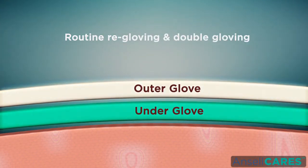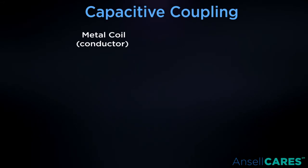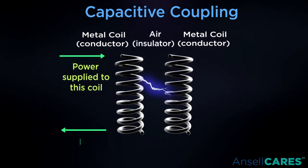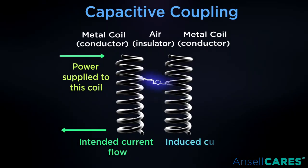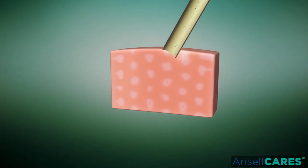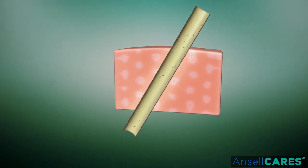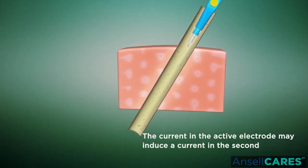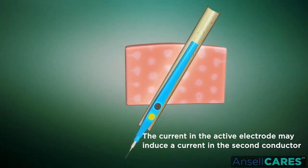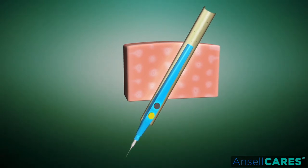Solution: routine re-gloving and double gloving can prevent these problems. Regarding capacitive coupling: capacitance is the ability of two conductors to transmit electrical flow even if they are separated by an intact layer of insulation. Capacitive coupling can occur even when the insulation around the active electrode is intact and the tip of the electrode isn't touching anything metal. If the active insulated electrode is wrapped around a towel clamp, placed inside a metal trocar sleeve, or comes in close contact with any conductive substance for an extended period of time, the current in the active electrode may induce a current in the second conductor. As long as the induced current can dissipate easily through a large surface of tissue, it will not present a problem.